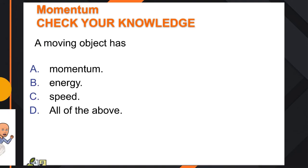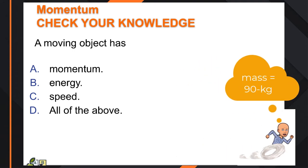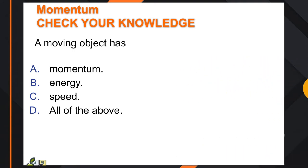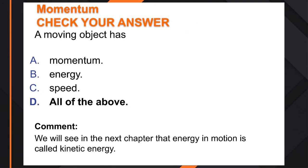Let's check your knowledge. What does a moving object have? A moving object has to have some sort of velocity, so it's going to have kinetic energy. And if something is moving, it also has momentum. So the answer is that it has all of those.